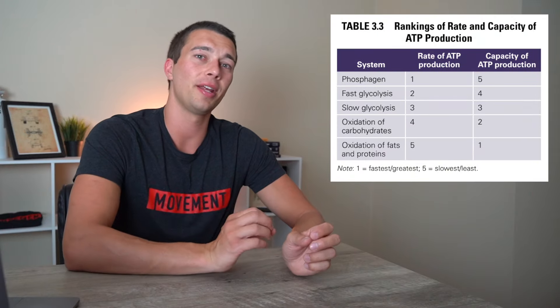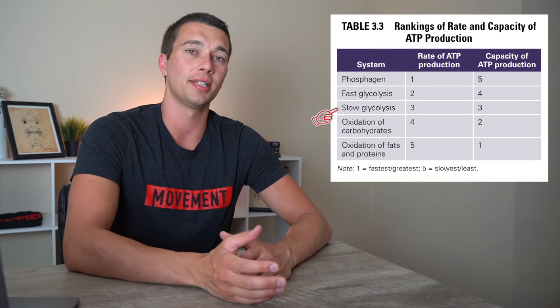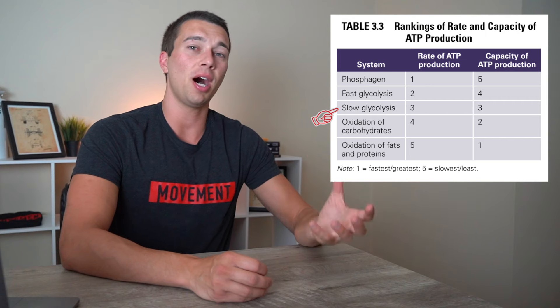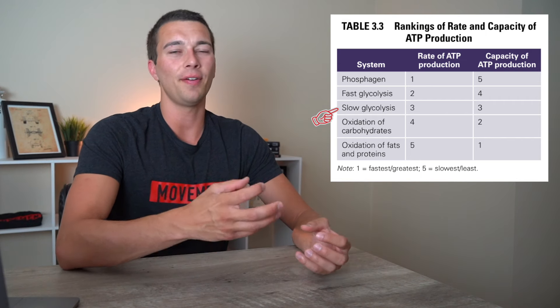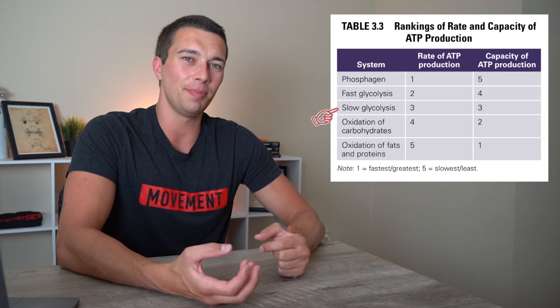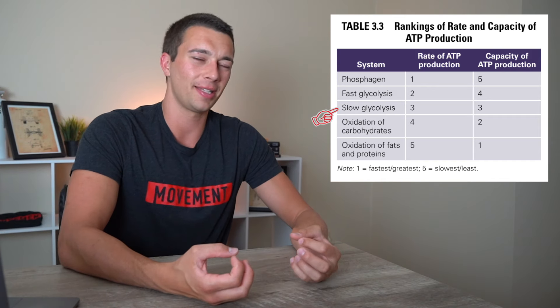Getting back to the chart, we're going to talk about aerobic or slow glycolysis, and that's going to be kind of right in the middle. For this energy system, we're getting a moderate amount of ATP, and we have a moderate capacity for the system, meaning that it can produce a fair amount of ATP, but it also takes a fair amount of time.